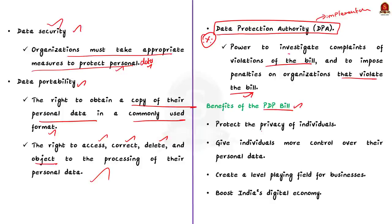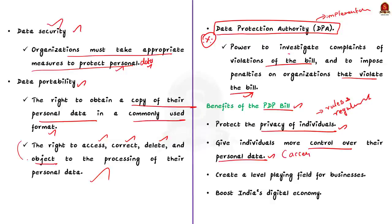The benefits of the Digital Personal Data Protection Bill are as follows. First, it will protect the privacy of individuals by setting out clear rules for collection, use and storage of personal data. The bill will give individuals more control over their personal data by giving them the right to access, correct, delete and object to processing of their data. The bill will also create a level playing field for businesses by ensuring all organizations comply with the same data protection standards, which in turn will boost India's digital economy by encouraging businesses to invest in data-driven technologies. This is the reason NASSCOM has welcomed this bill.